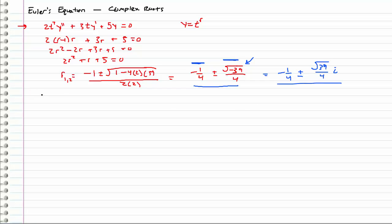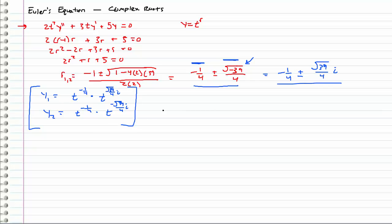These are the roots we're going to be working with. That gives us y1, which is t to the negative 1/4. I'm going to separate out the real part and the imaginary part, writing this as t to the negative 1/4 times t to the square root of 39 over 4 times i. These are the two solutions, y1 and y2. Our final solution is c1 y1 plus c2 y2, but we want to express our solution in real terms and get rid of this i.